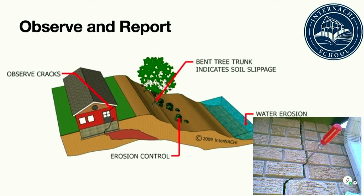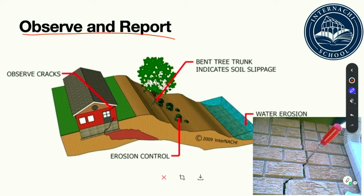This course will help prepare the home inspector to observe and report on structural components and their condition in a residential property. The structural portion of a home inspection is perhaps the single most important part. A house's structural integrity is often the issue of greatest interest to home buying clients. If the home is structurally unsound, not much else matters. It's critical for the inspector to be competent in his ability to observe and report on what he sees during the structural portion of a home inspection.